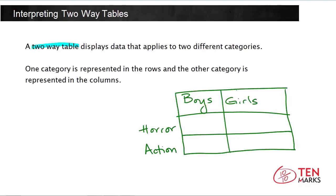Here is an example of a two-way table. Here you have the category of whether or not you're a boy or a girl. The other category is movie genre — do you like horror or action? The category of movie genre is represented in the rows, and the category of gender is represented in the columns.